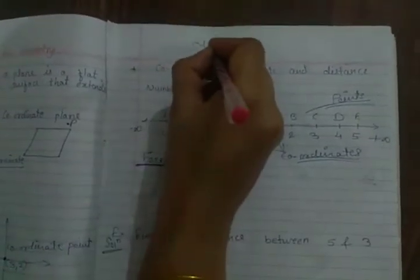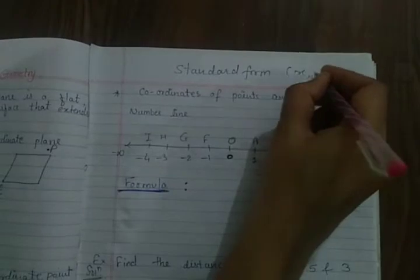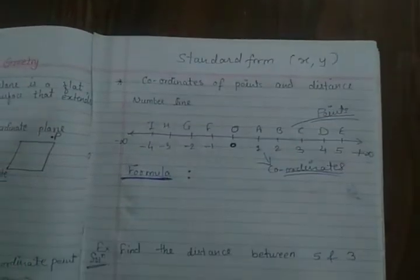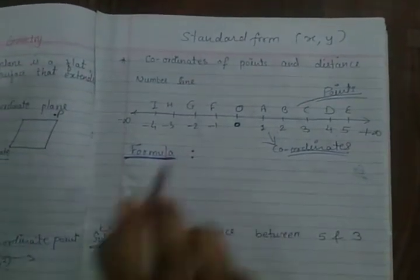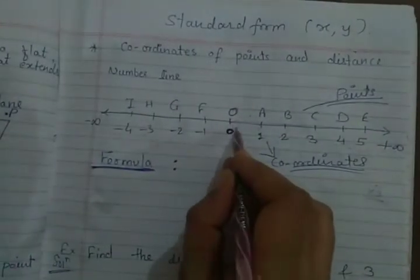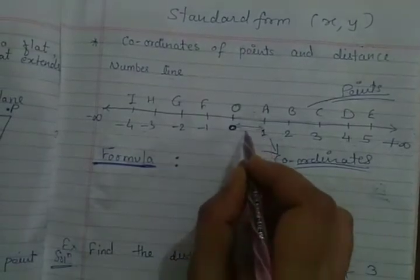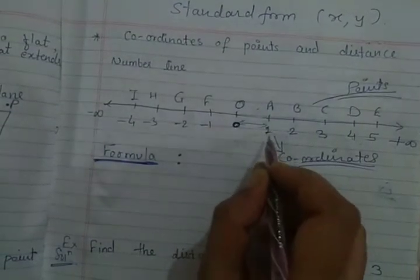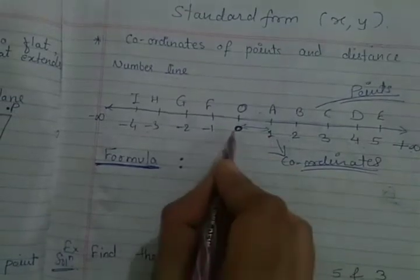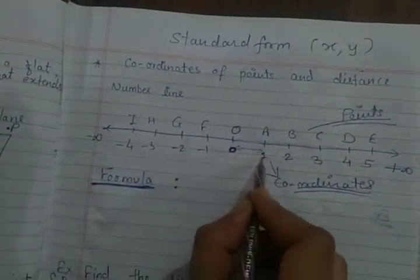Now we know about the standard form. Remember the standard form of a coordinate point: round bracket X and Y. Now if I ask you to find out the distance between 2 coordinate points — from 0 to 1 — you just first check which number is bigger and which one is smaller, then subtract the smaller number from the bigger one.